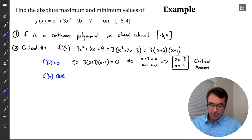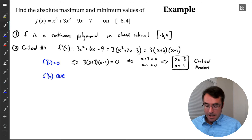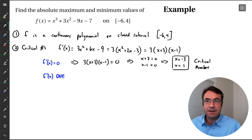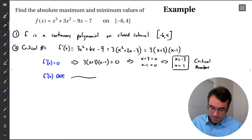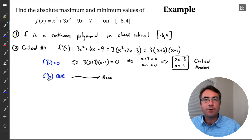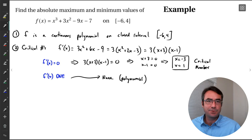Now we want to check: is our derivative undefined anywhere? Looking at 3x squared plus 6x minus 9, no — it's always defined. That's a polynomial; there's no division by zero or similar issues. So there are no critical numbers where the derivative is undefined, since both our function and its derivative are polynomials, which are always differentiable.